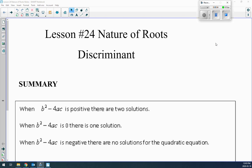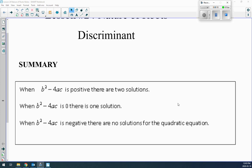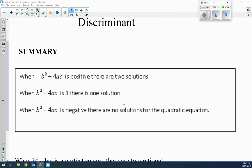Okay, so lesson 24, nature of the roots, which is called the discriminant. As we were talking about in lesson 23, if you look at what's underneath the root symbol, you have b squared minus 4ac. And there are three possibilities.